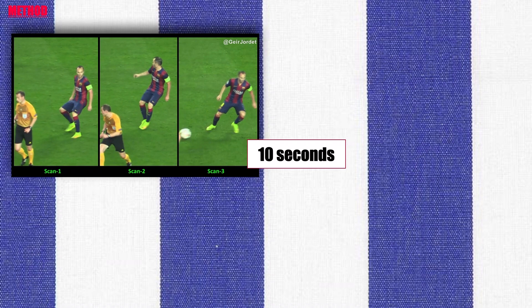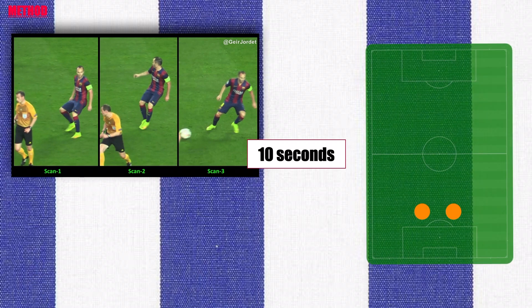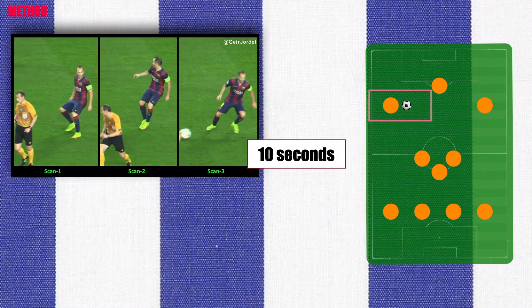Ball possession was defined as having control of the ball. Positional roles were categorized into central defender, side defender, central midfielder, winger, and forward, based on the official lineup for each game. Pitch location is defined as the player's position on the pitch when receiving the ball from a pass. Pass distance is calculated as the difference between the location of a pass and its reception. Opponent pressure was operationally defined as the distance between the target player and the closest opponent at the moment the target player received the ball.